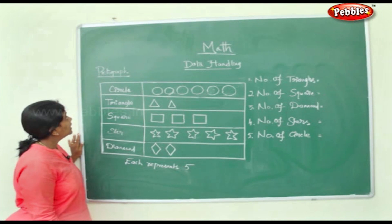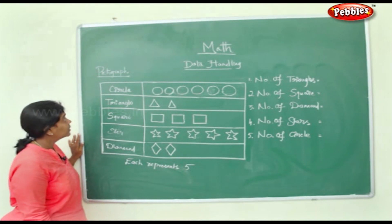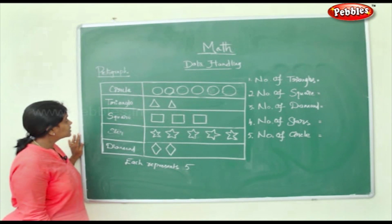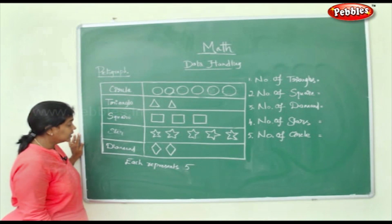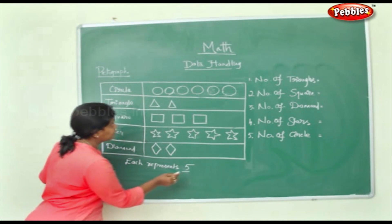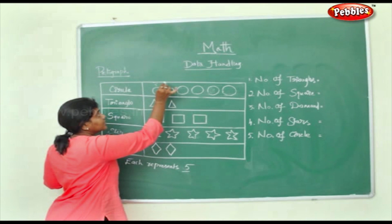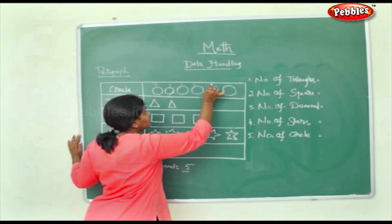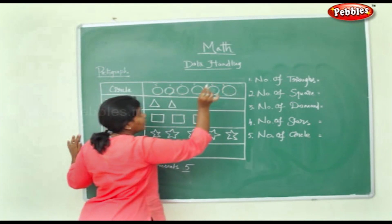In this data handling they've given us a pictograph. There are circles, triangles, squares, stars, and diamonds here. Each shape represents 5. So each is 5.